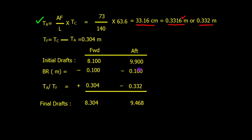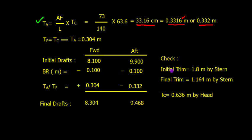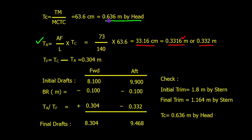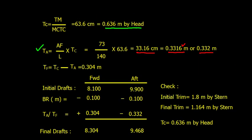Now let's check. Initial trim: 9.9 minus 8.1 equals 1.8 meters by stern. Final trim: 9.468 minus 8.304 equals 1.164 meters by stern. The change from 1.8 to 1.164 means you trimmed by head, and the difference is 0.636 meters, which matches our TC value of 0.636 here.